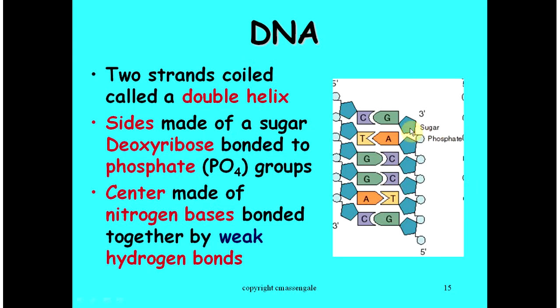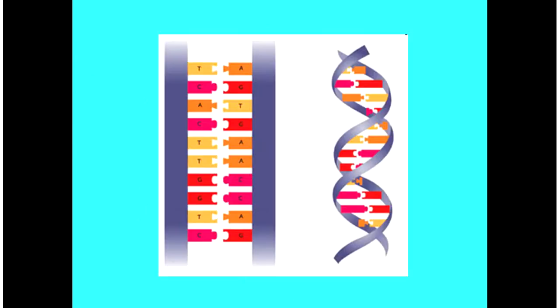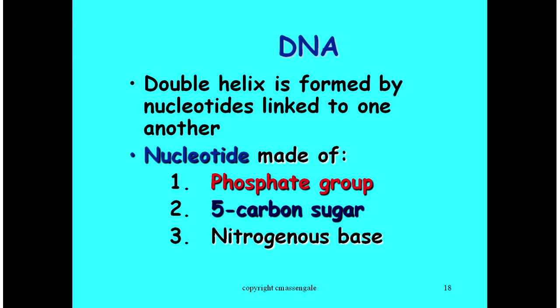You're going to label a sugar, a pentagon, a phosphate circle, and one of these molecules in the middle, a nitrogen base. Again, you're going to list those three parts of the nucleotide under number 18.